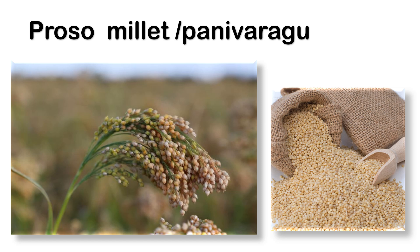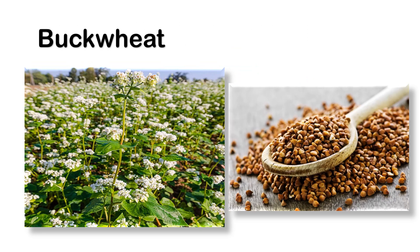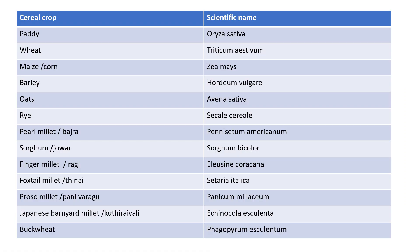Next cereal crop example is proso millet, also called panivarag. This is the plant and this is the grain. Next crop is buckwheat. The buckwheat plant is different and its grain is different.